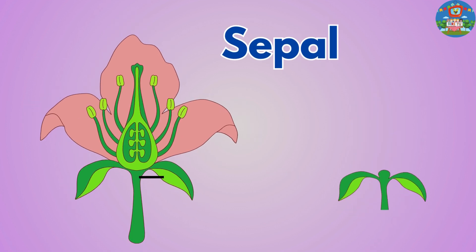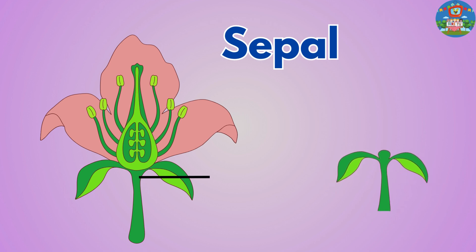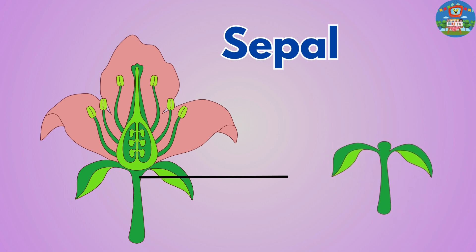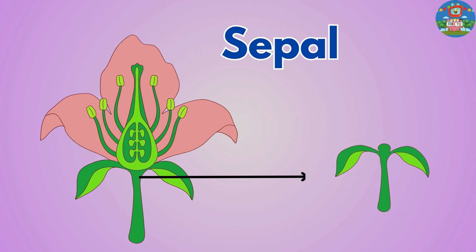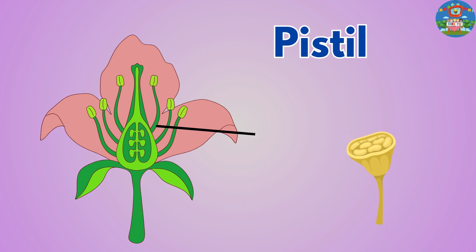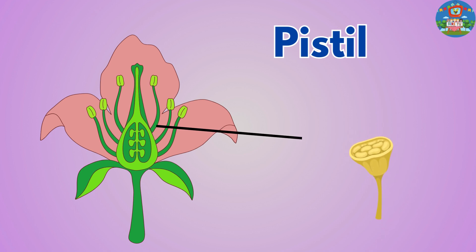Sepal. Sepals are the small, green leaf-like structures found underneath the petals, protecting the flower bud as it develops. Pistil. The pistil is the female reproductive part of a flower, which contains the ovary where seeds develop after pollination.